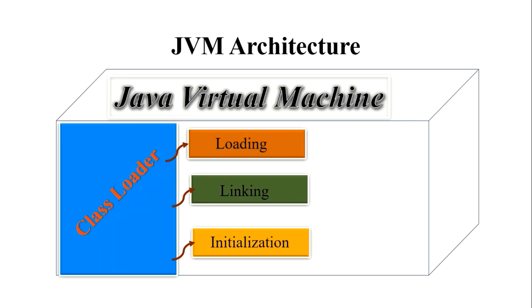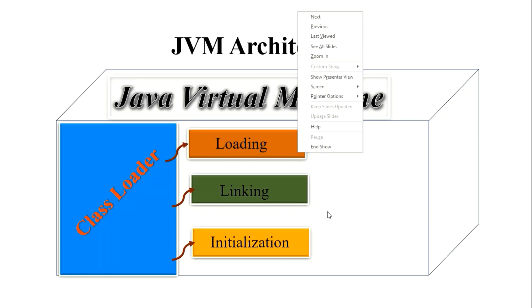The class loader is further divided into three components. What is the class loader? Class loader is the first main component in JVM architecture. It has three specific phases: loading, linking, and initialization.